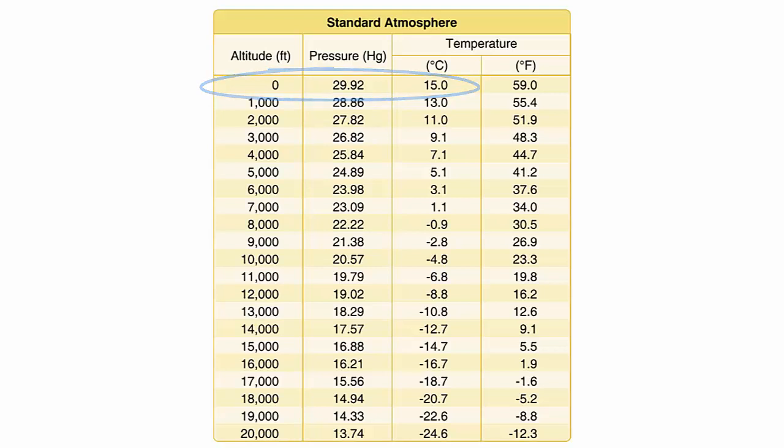The standard temperature lapse rate is one in which temperature decreases at a rate of approximately 2 degrees Celsius per thousand feet, up to an altitude of 36,000 feet. At 36,000 feet, the temperature is approximately negative 65 degrees Fahrenheit, or minus 55 degrees Celsius. Above this point, the temperature is considered constant, up to 80,000 feet.